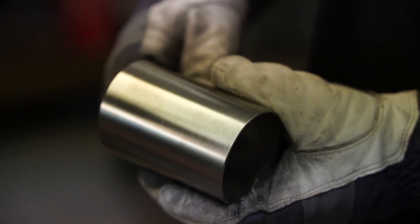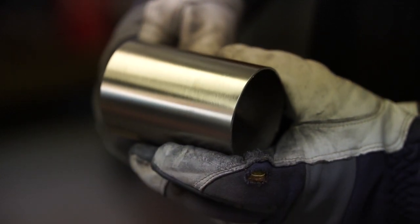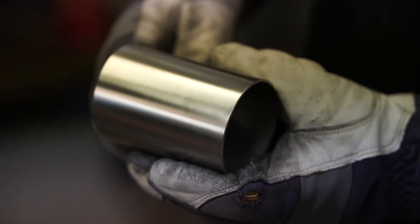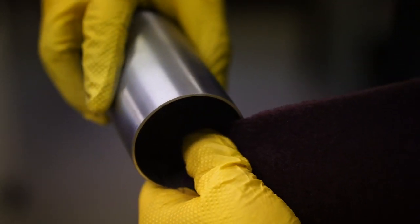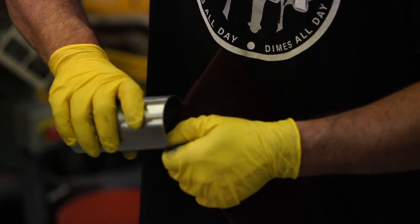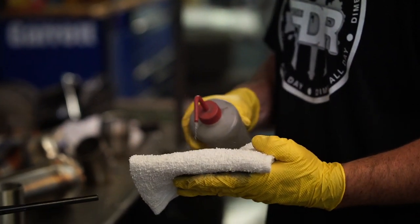After it's welded it always looks amazing with that gold haze around your heat affected zone. Make sure to scotch brite the inside of the tube as well as the face of the cut. There's tons of things that can get trapped inside of the little tiny edges on a bandsaw cut.